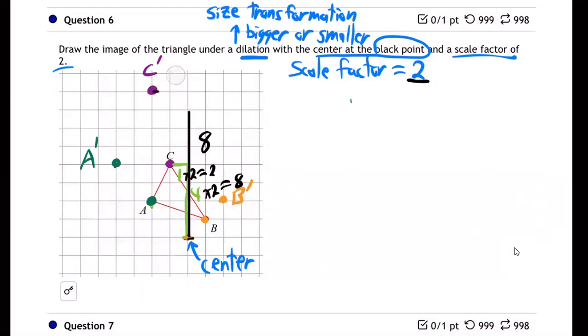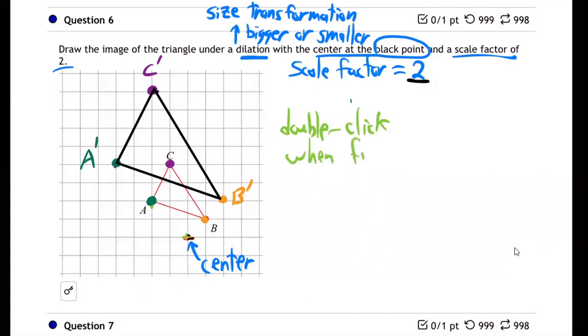So now I've got those. Let me erase those arms. So now I've got A prime, B prime, C prime. And so now you connect them. So there's the new triangle twice as big as the original triangle. Make sure you remember to double-click when you finish the shape. That tells the graphing program that you're done and there's your shape. Double-click as you finish it.